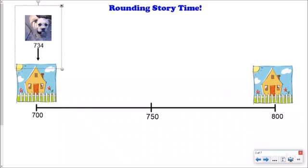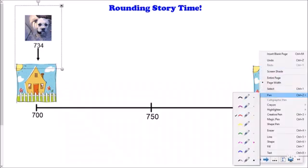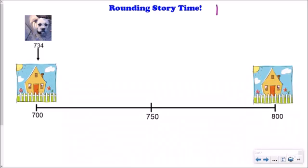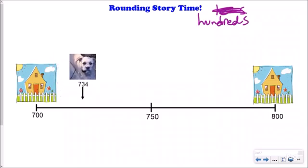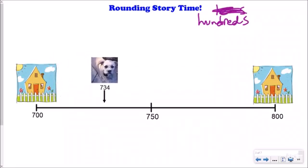We have the number 734 right there underneath our dog Sandy Sue, and we want to round this number to the nearest hundreds place. So what we're gonna do is take a little walk with Sandy Sue. Sandy Sue is at 734—she's starting at her home at 700 and she's trying to walk to her friend Lucky's house at 800. So Sandy Sue leaves the door, she starts walking, she stops to tinkle, and then she keeps going.